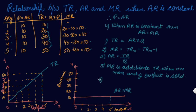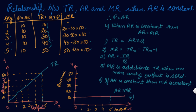Sixth point: in case price is constant, implying AR is constant, then MR should also be constant, which means AR is equal to MR. If AR is constant then MR is constant. Constant MR implies a constant addition to TR when an additional unit of output is sold. This implies that TR will increase at a constant rate, which we have proved — AR is equal to MR in this case.